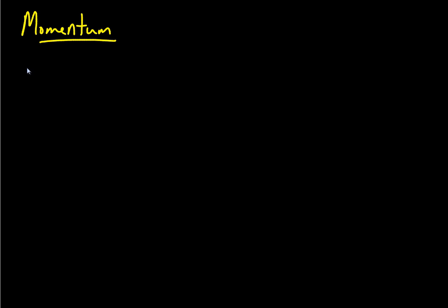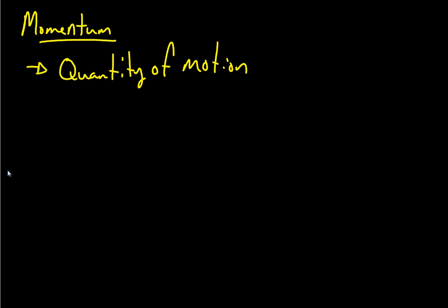Let's talk about momentum. Momentum is quite simply the quantity of motion. Way back when, Isaac Newton was one of the main studiers of the concept of momentum, and the definition of momentum looks like this: P is the symbol for momentum and equals the mass of an object multiplied by its velocity — P equals m times v.